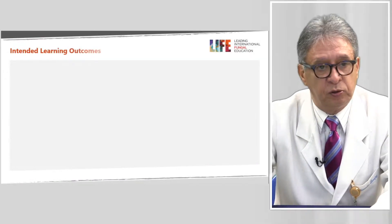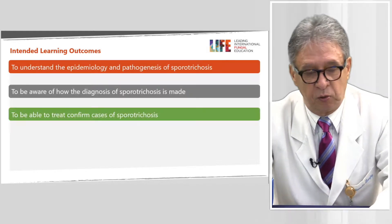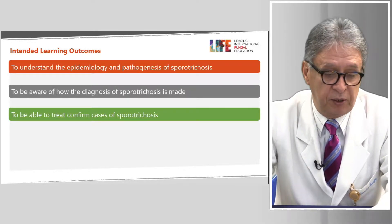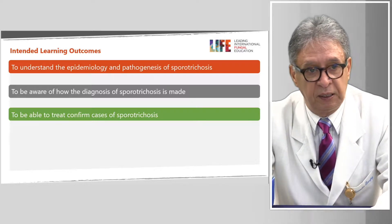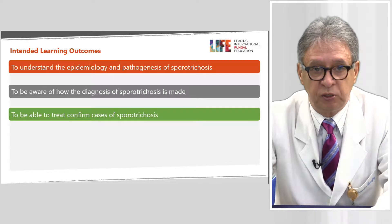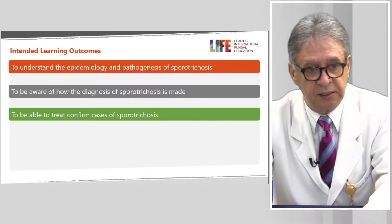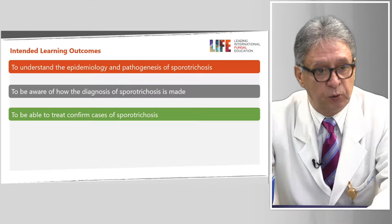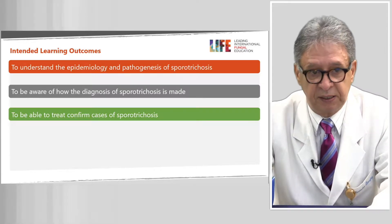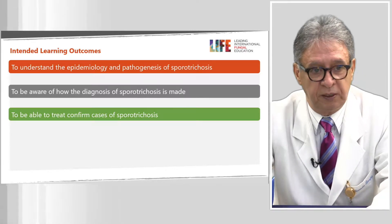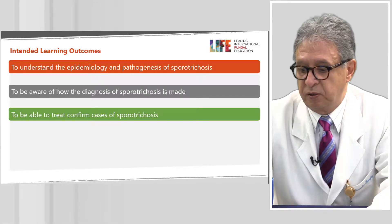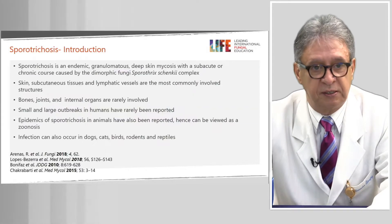I'm going to talk about sporotrichosis, this important mycosis. I have three objectives of my lecture. The first one is to understand the epidemiology and pathogenesis of this disease. The second is to be aware of how the diagnosis of sporotrichosis is made. And, of course, to be able to treat the confirmed cases of this mycosis.